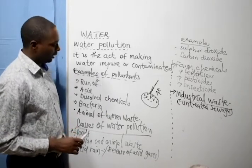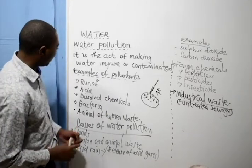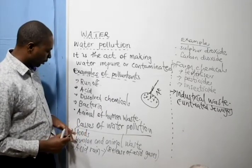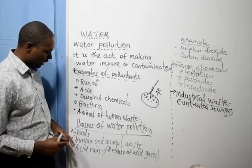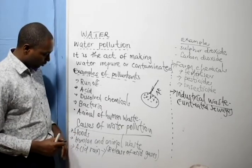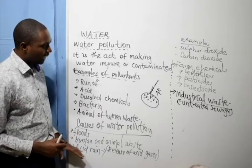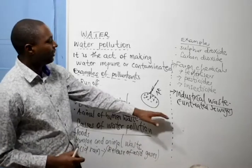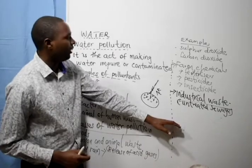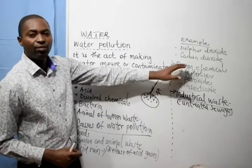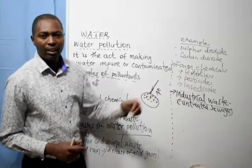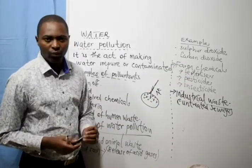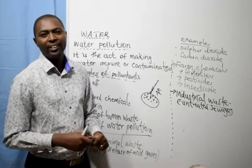So we have learned that the causes of water pollution are floods, human and animal waste, acid rain, industrial waste, and excess farm chemicals. Thank you for viewing.